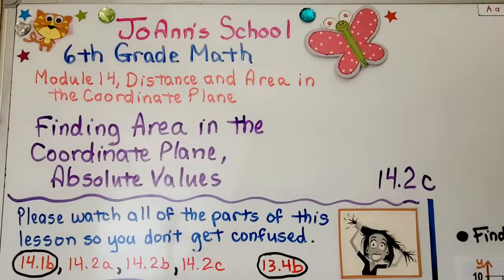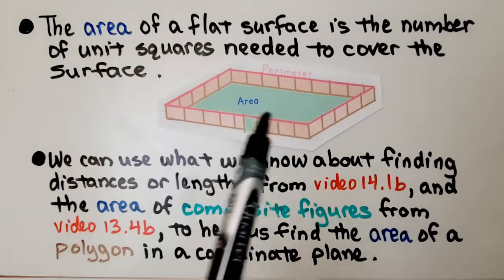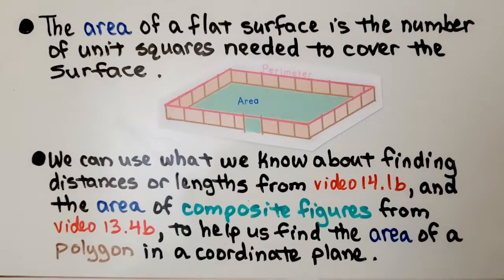We're now at lesson 14.2c, and we're finding area in the coordinate plane using absolute values. The area of a flat surface is the number of unit squares needed to cover the surface. We can use what we know about finding distances or lengths from video 14.1b and the area of composite figures from video 13.4b to help us find the area of a polygon in a coordinate plane.